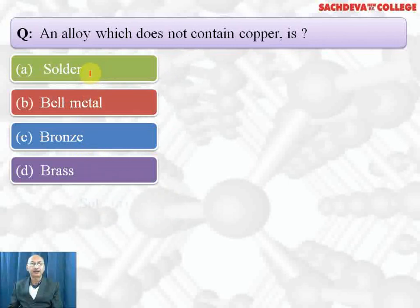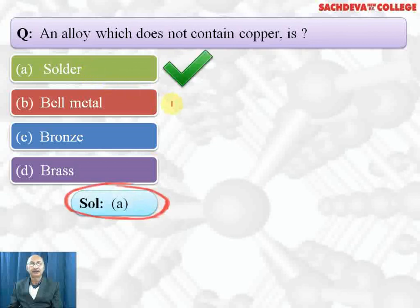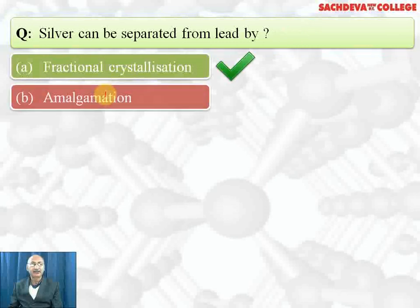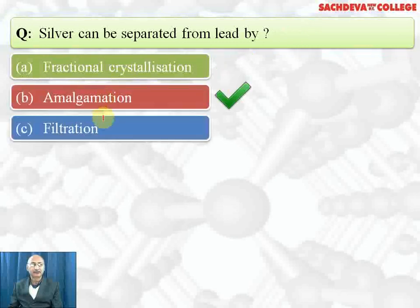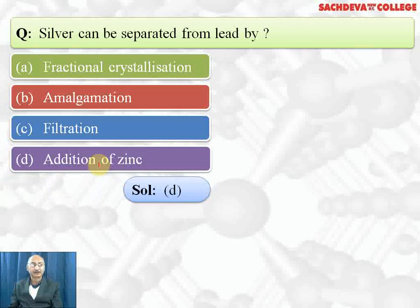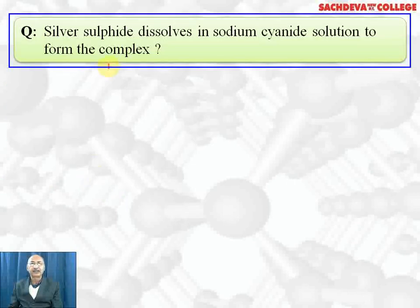Silver can be separated from lead by fractional crystallization, amalgamation, filtration, or addition of zinc. Correct answer is addition of zinc. Zinc is miscible with silver but lead is not miscible with silver and therefore they can be separated. So D part is the direct answer.